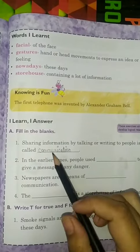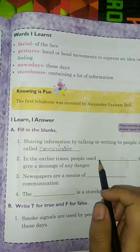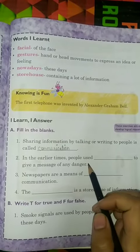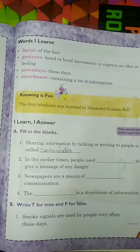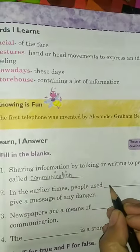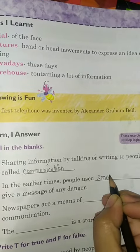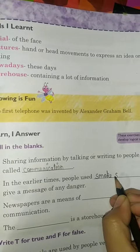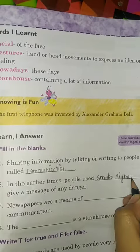Next: in the earlier time, people used dash to give a message of danger. How did people give a message of danger? Smoke signal. Yes, here you can write smoke signal — S-M-O-K-E S-I-G-N-A-L.